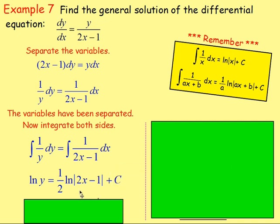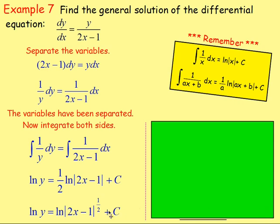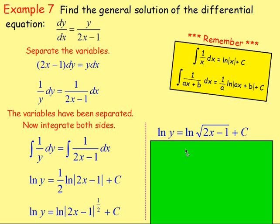From there, use your log rules. We've got a half in front of ln, so let's move that up. That goes to ln y equals ln(2x minus 1) to the power of a half, and we've still got plus c. After that, the power of a half is going to be square root. So that means ln y equals ln of the square root of (2x minus 1) plus c.